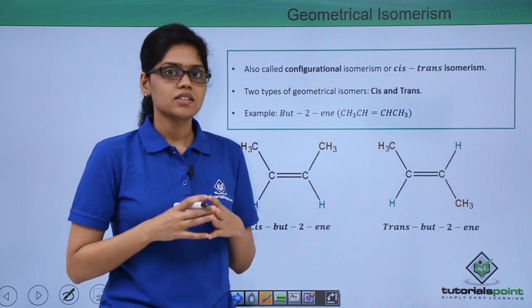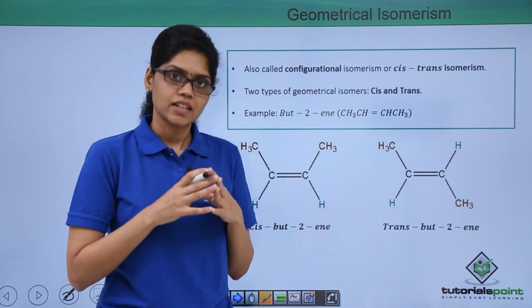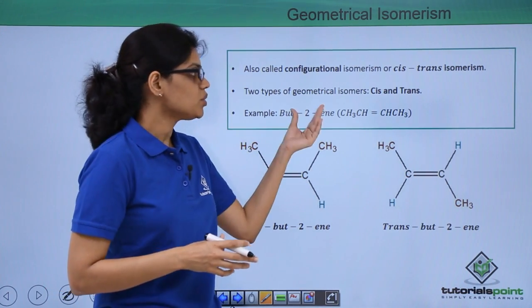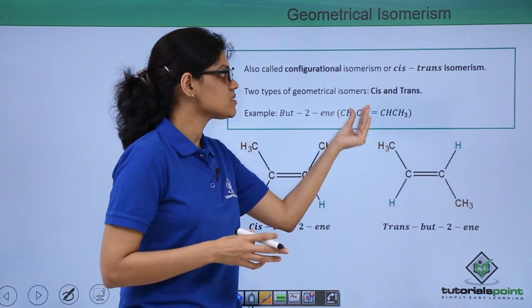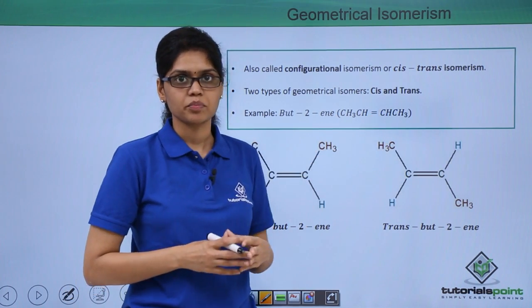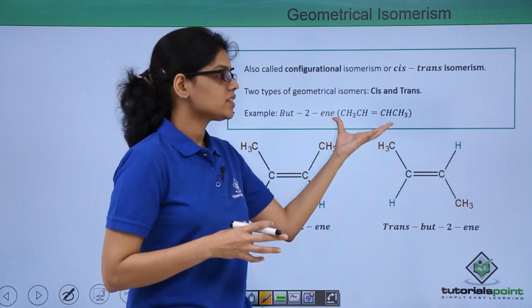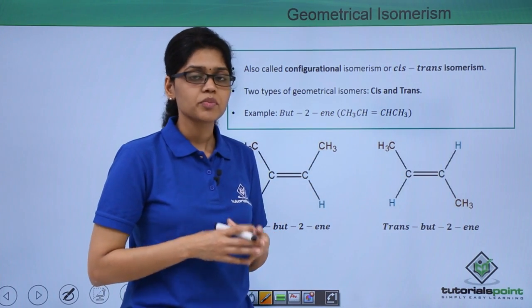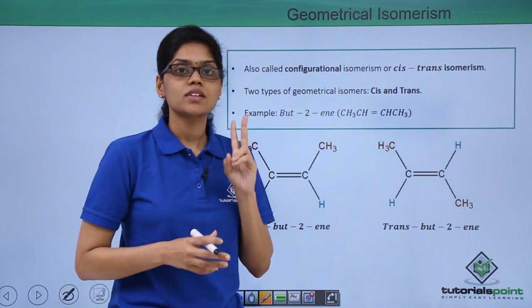Let us understand these two types of isomers using an example of but-2-ene whose structural formula is CH3CH=CHCH3. If you try to elucidate the structure of this particular formula you can see that you get two distinct structures.